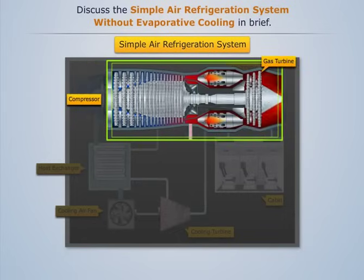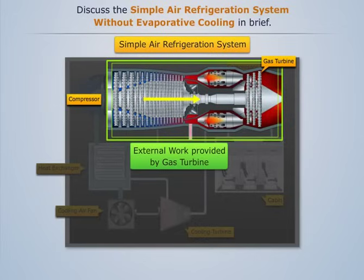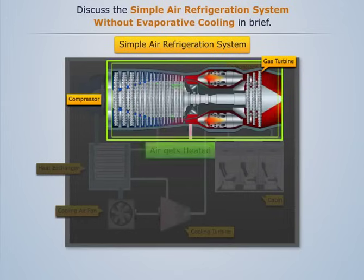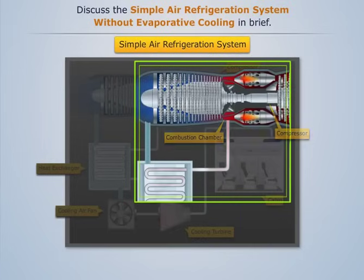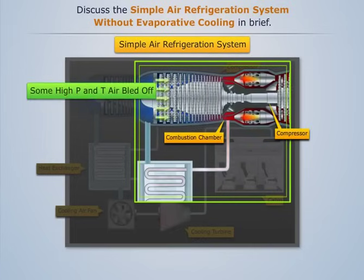The external work required by the compressor for this compression is provided by the gas turbine. In this process the air gets heated, and ideally this process is considered isentropic in nature. A small portion of this high pressure heated air is bled off from the main compressor, whereas the rest of the air is sent to the combustion chamber.